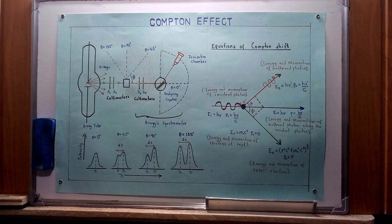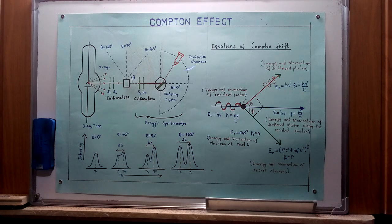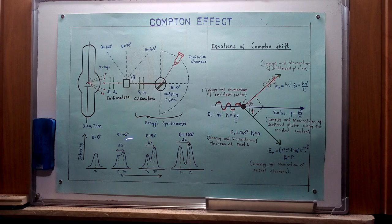The beam is incident on the graphite block, which we refer to as the target. This scatters the ray in all directions. The scattered beams are then measured by the Bragg's spectrometer at different angles, showing intensity against wavelength at those specific angular ranges, as illustrated on the board.